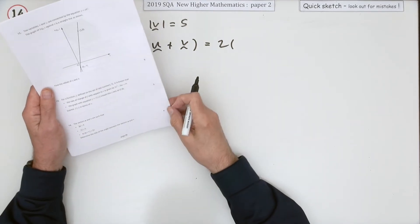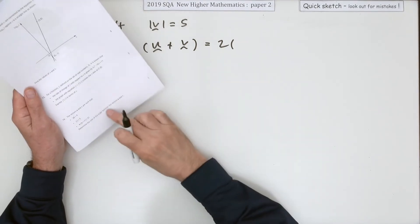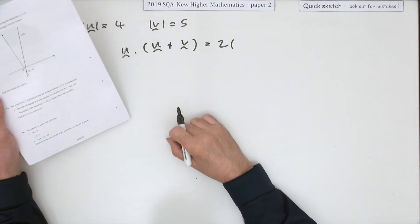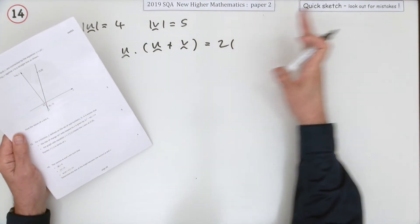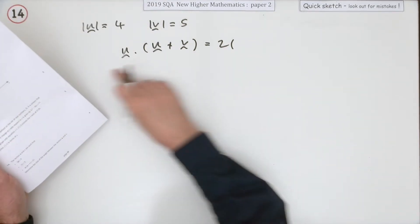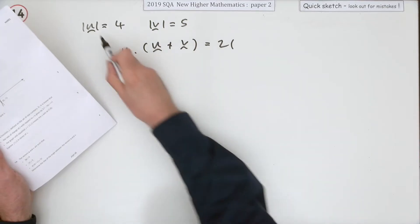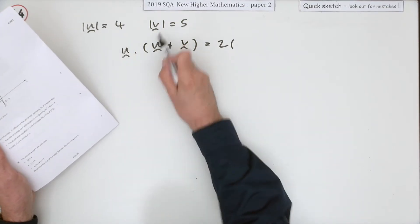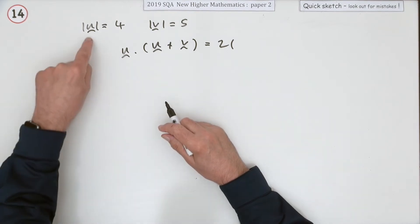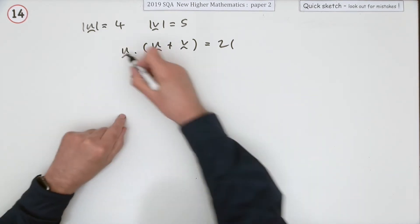Question 14 from paper 2, the 2019 higher maths angle between vectors, but it's not the big 7 mark one. It's only four marks here, but there's not all these components and all that arithmetic to do. It's just going to be based on these scalar products. It tells you the magnitudes of the vectors and it gives you this little equation here involving a scalar product and asks you for the angle between u and v.